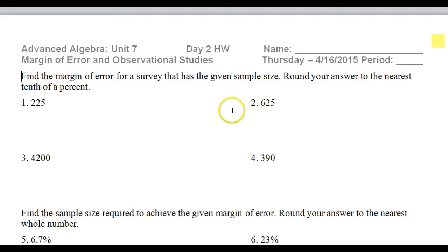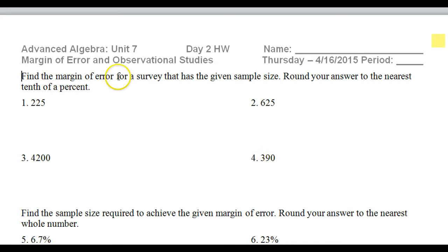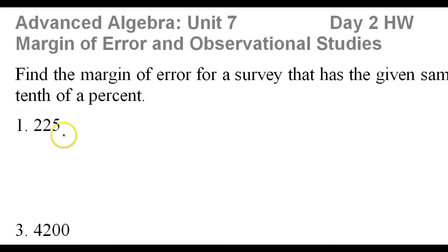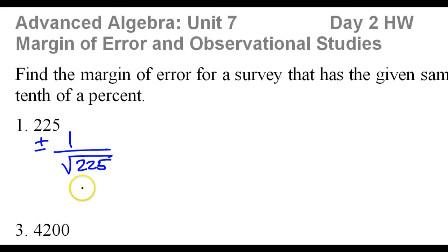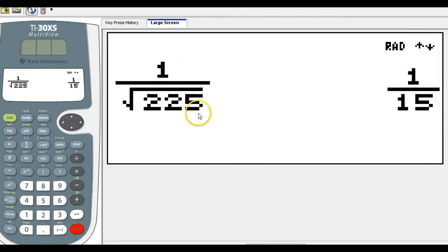So that's what margin of error does for you. The calculation part is really easy — the tougher part was understanding what it all means. So let's calculate a few problems and practice just calculating margin of error. The margin of error is going to be plus or minus 1 over the square root of the sample size, so for a sample size of 225: 1 over the square root of 225 is 1/15.